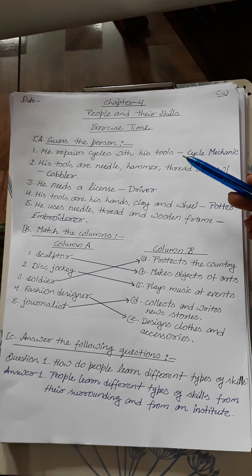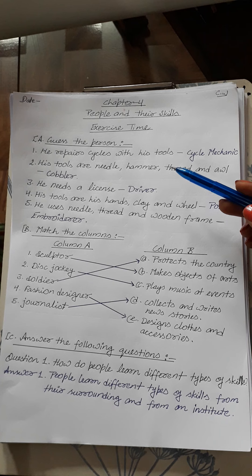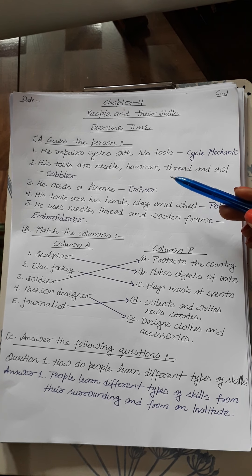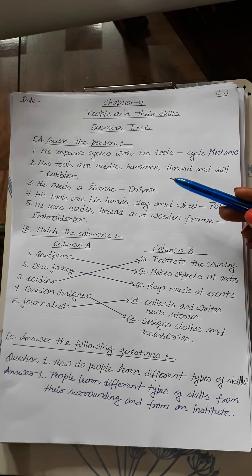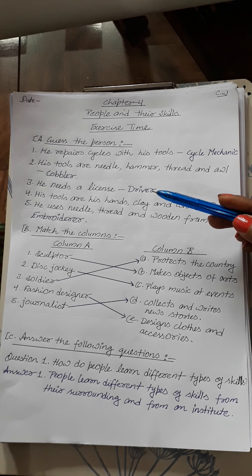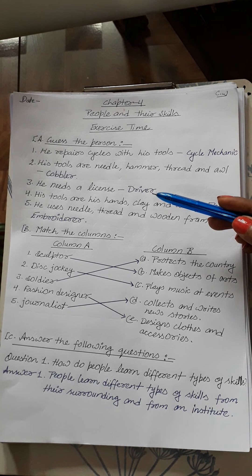Number 2: His tools are needle, hammer, thread and awl. So he is a cobbler. Number 3: He needs a license. So he is a driver.